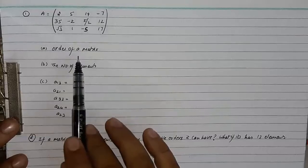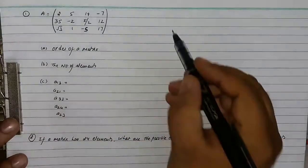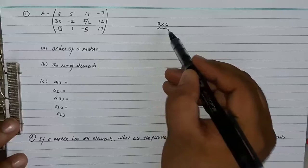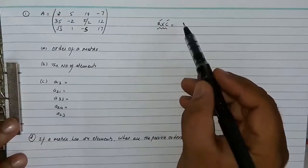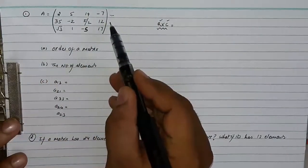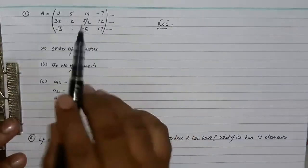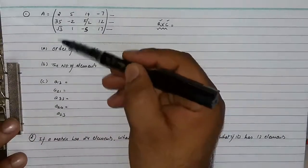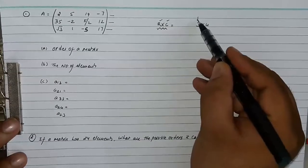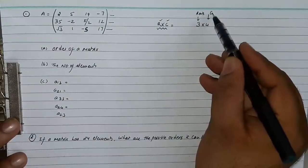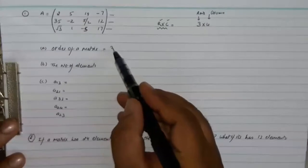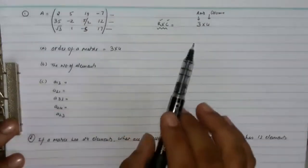In the first question we have to find out the order of a matrix. The order of a matrix is always expressed in the form rows into columns. Rows are the horizontal ones — here there are 3 rows and 4 columns, so the order of this matrix is 3 into 4. We always write order in the form row into column.